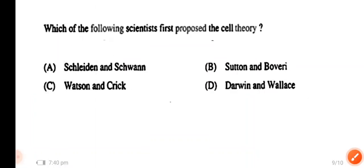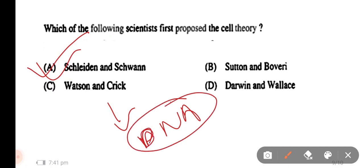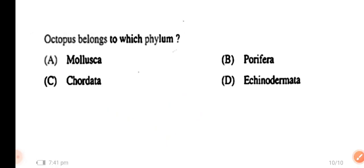Question number 9: which of the following scientists first proposed the cell theory? The options are Schleiden and Schwann, Watson and Crick, and Darwin and Wallace. The right answer is option A: Schleiden and Schwann, who together proposed the cell theory.